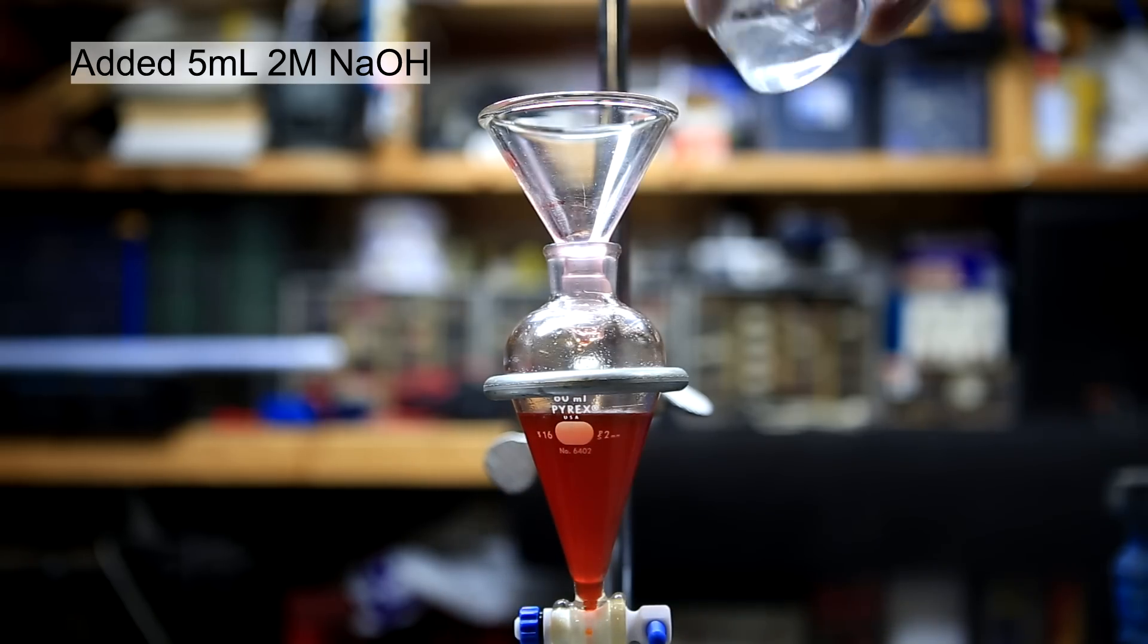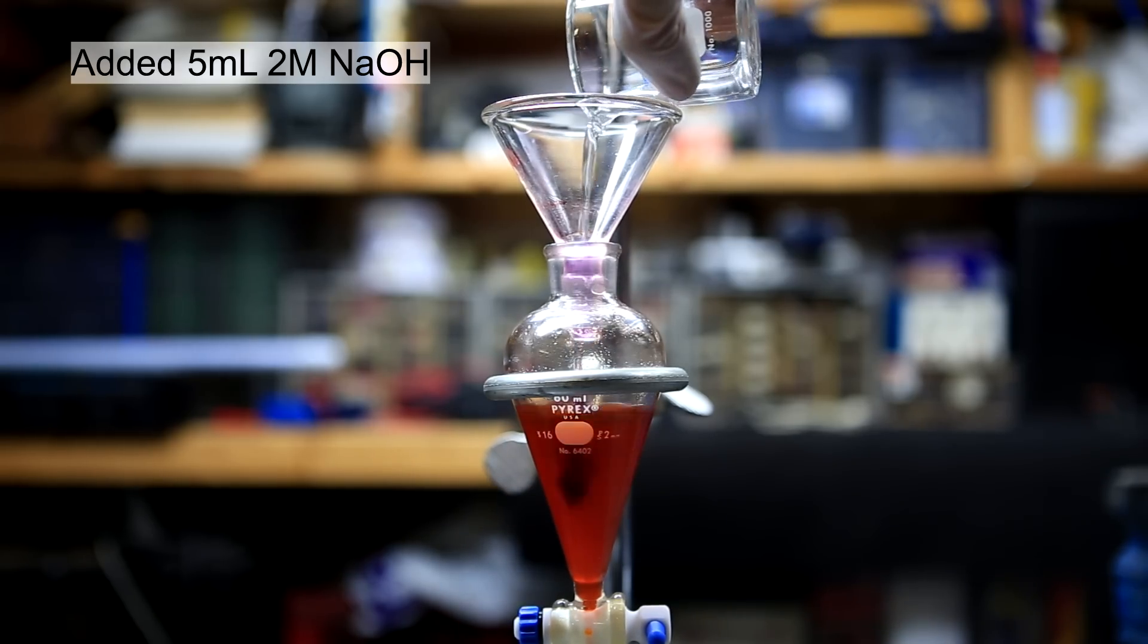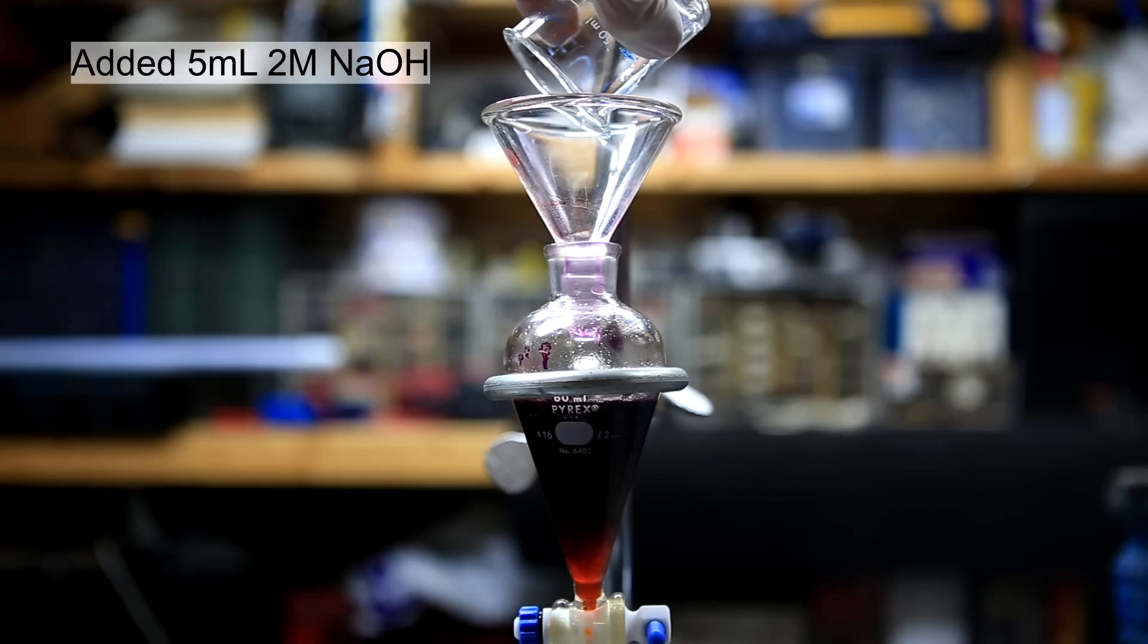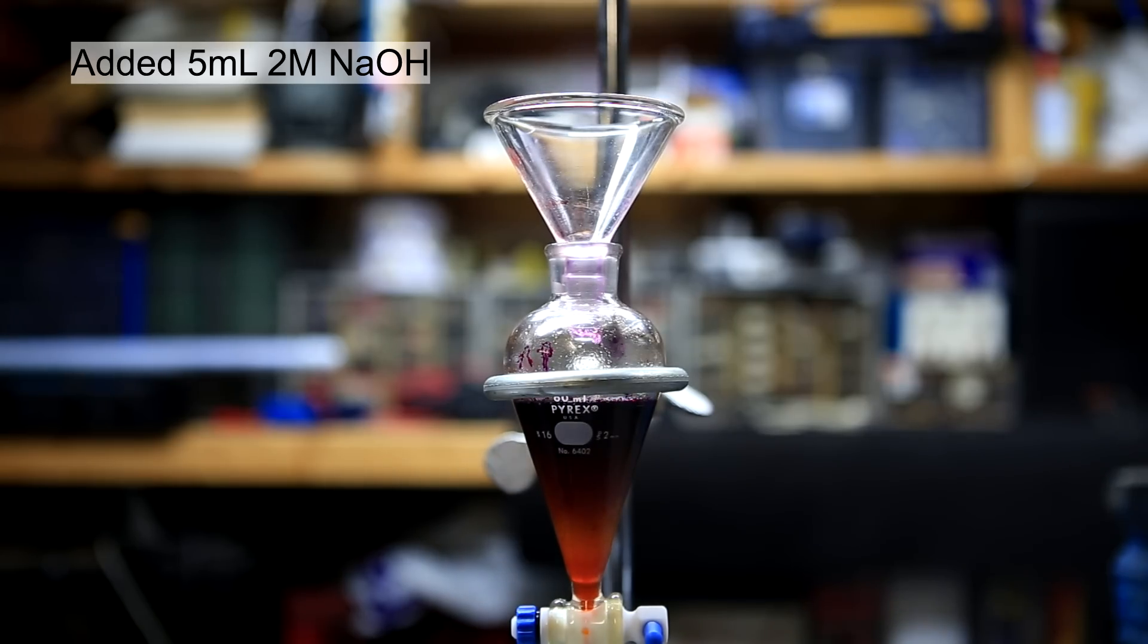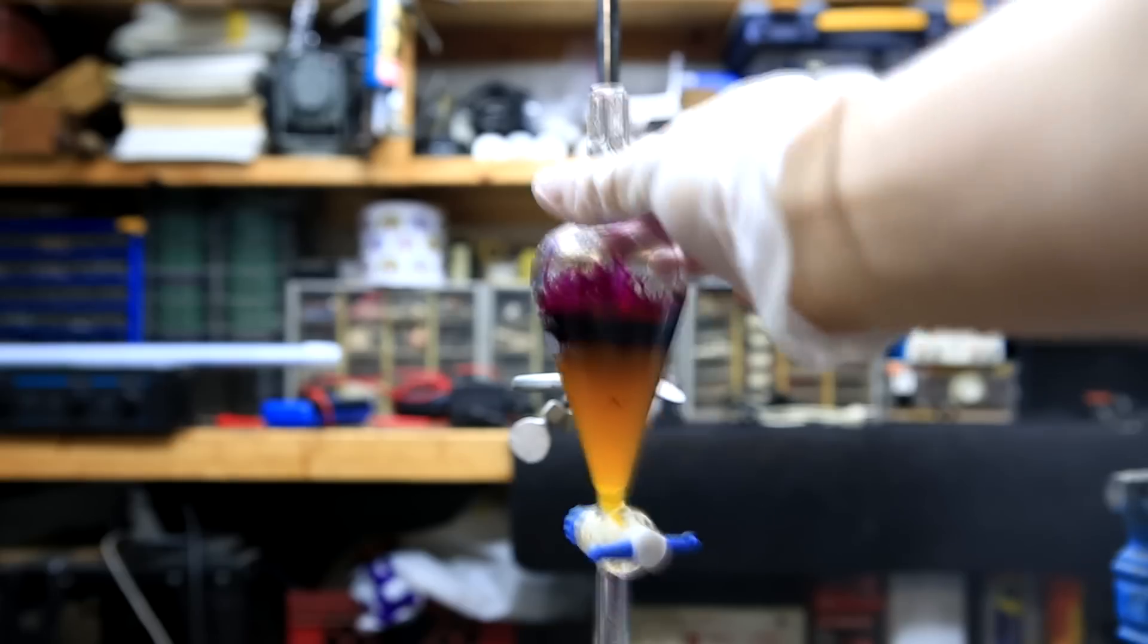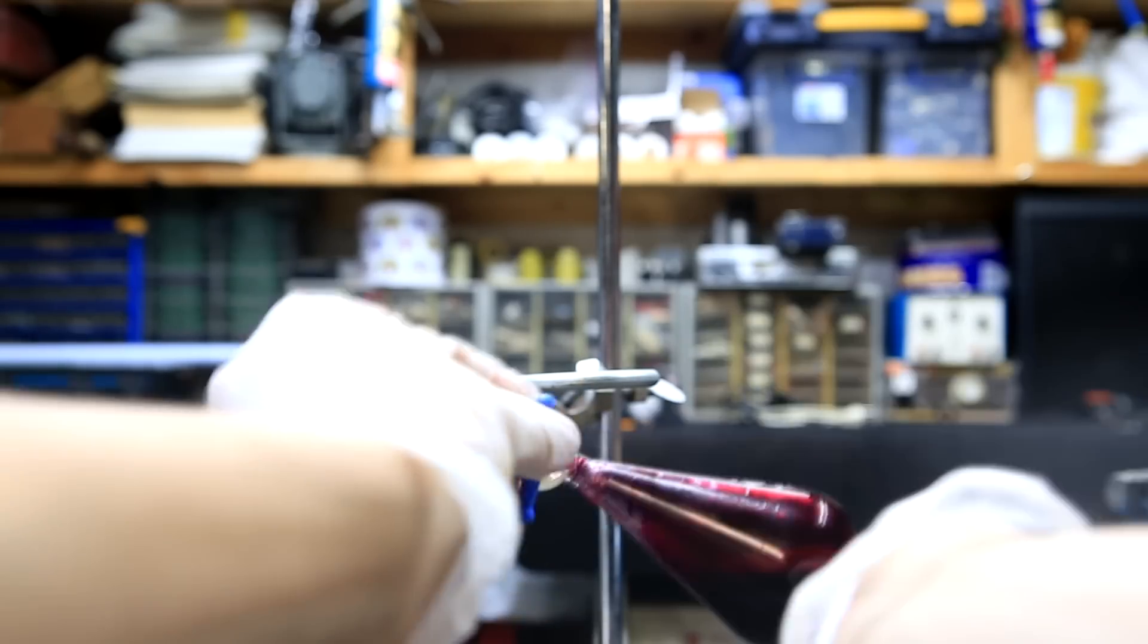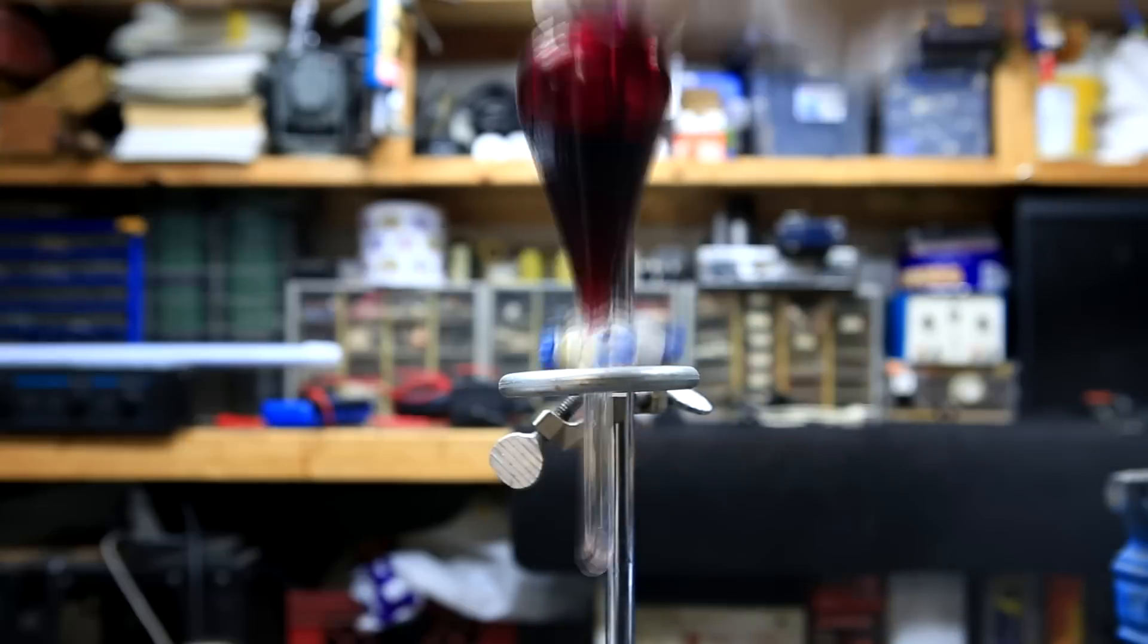To this was added 5 ml of 2 molar sodium hydroxide. In this step, we're converting phenolphthalein into a water-soluble salt which has its characteristic purple color. The separatory funnel is capped and shaken vigorously to make sure that we react as much of the phenolphthalein as possible.